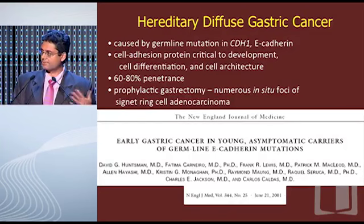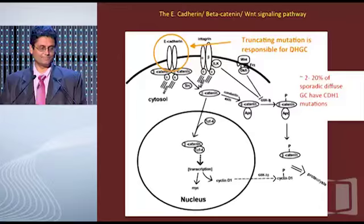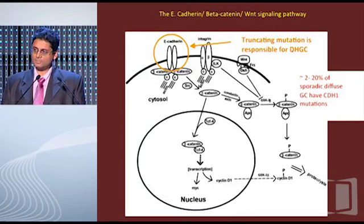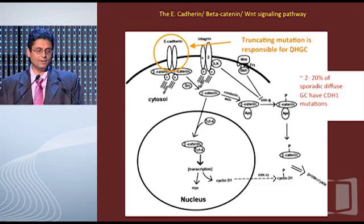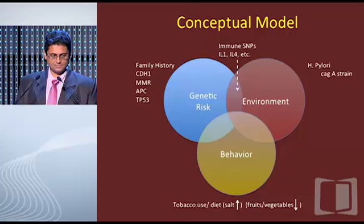Hereditary diffuse gastric cancer is caused by a germline mutation in CDH1. This paper by David Huntsman in 2001 highlights that the standard of care for kindreds who have a germline mutation in CDH1 and no evidence of disease is to consider prophylactic gastrectomy, at least beginning in their 20s. A germline or somatic mutation in E-cadherin leads to loss of protein at the cell surface — this is why diffuse gastric cancer grows in a discohesive way — and leads to increasing beta-catenin in the cytosol, then nuclear translocation and carcinogenesis.